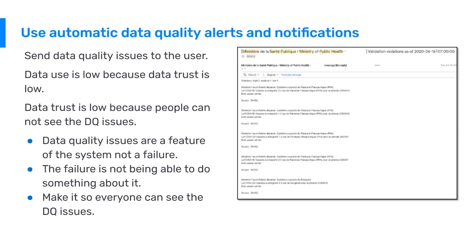Oftentimes we see that data quality is poor because people don't trust the data. One of the main reasons they don't trust the data is because they cannot see the data quality issues. Maybe they're looking at a high level, national level, and they're not able to see the individual data quality issues because they're not going down to the individual facility level. So when they do see a data quality issue, they just make the assumption that all health facilities or all places that are capturing data also have data quality issues.